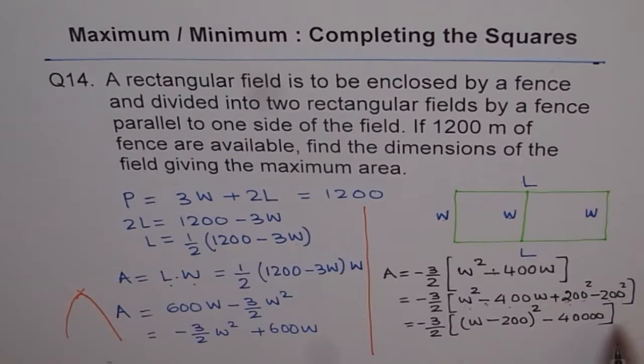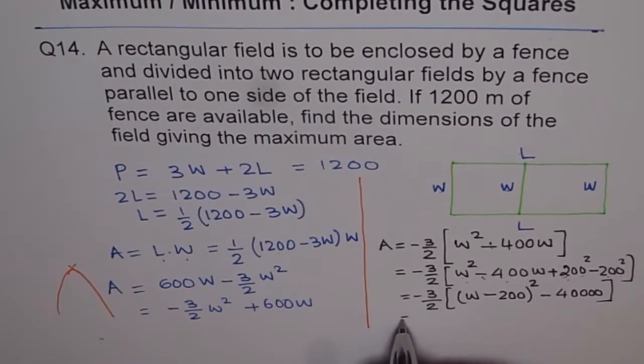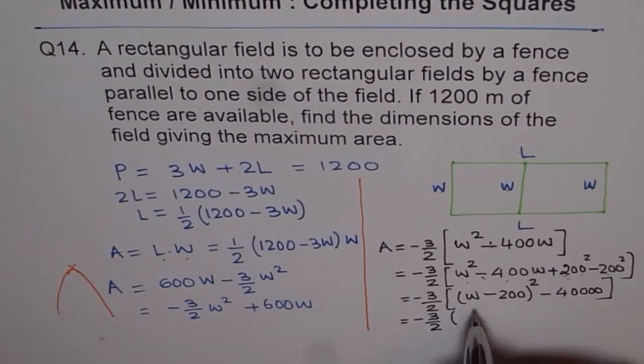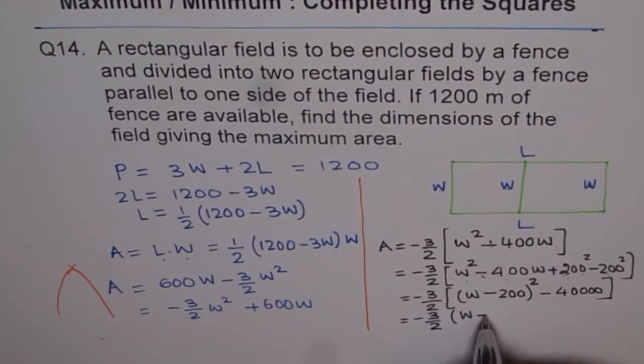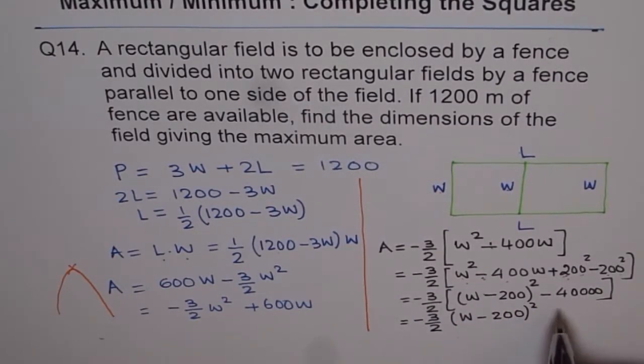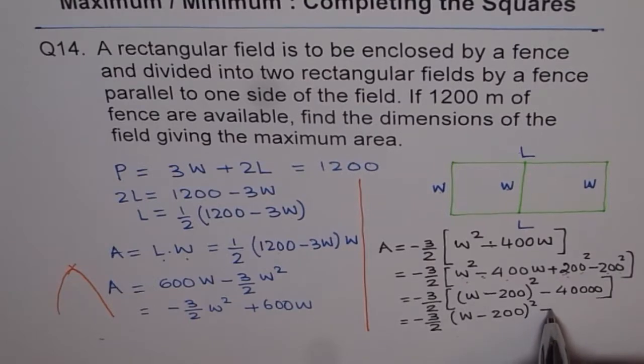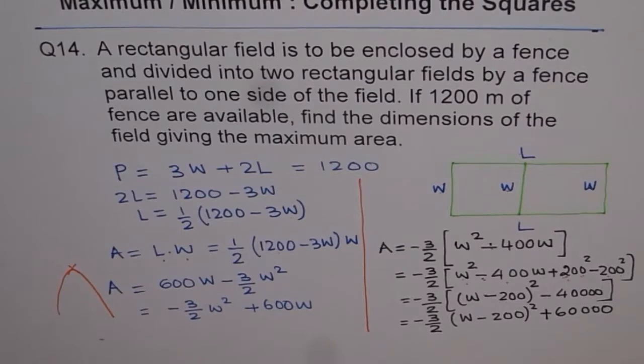Now we'll open the bracket and write down our equation. So when we open the bracket, we get minus 3 over 2 times W minus 200 whole square and now 40,000. 40,000 divided by 2 is 20,000 and times 3 is 60,000, right? And minus times minus is plus. So let's plus 60,000. Correct? So this is the equation in vertex form.